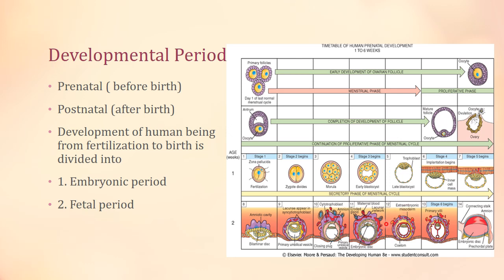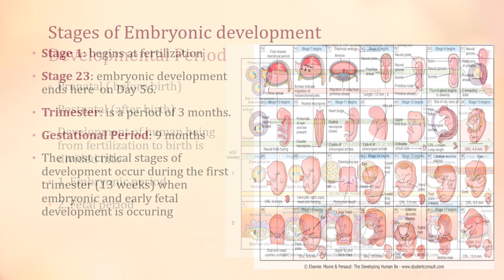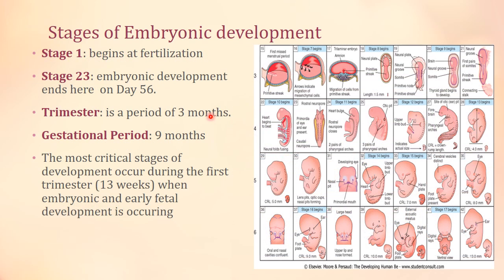We'll discuss these stages of the embryo one by one in later lectures. Embryonic development starts from stage 1, which begins at fertilization, and ends at stage 23, after which the fetal stage begins.